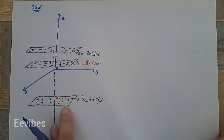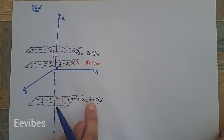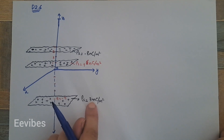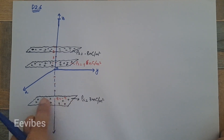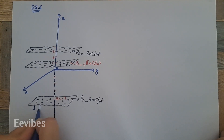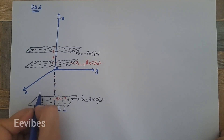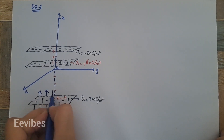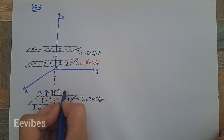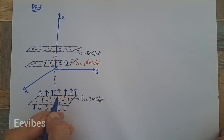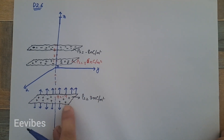One of the sheets of charges is positively charged and its surface charge density is equal to 3 nano coulombs per meter square. Since the surface charge density is positive, the sheet is positively charged. When we draw the electric field lines for this positively charged sheet, they direct away from it, because they are drawn with respect to the positive charge — there will be repulsion between the positive test charge and the positively charged sheet.